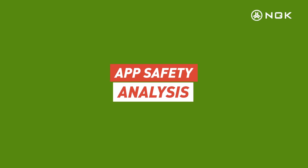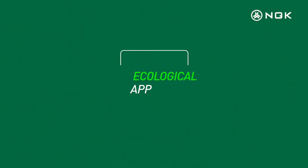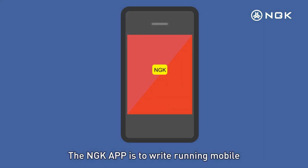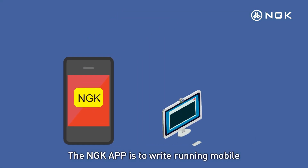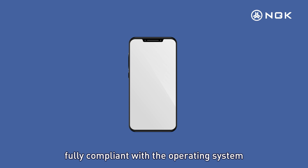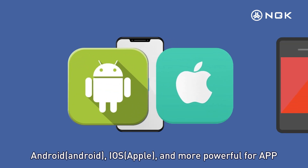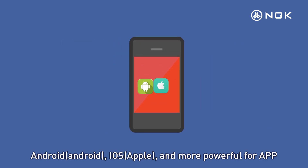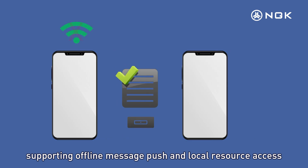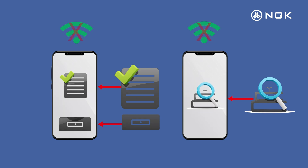App Safety Analysis. The NGK Ecological App is built to run mobile applications using native code, fully compliant with operating systems Android and iOS, and is more powerful for apps, supporting offline message push and local resource access, with fast access to cached data even without a network.